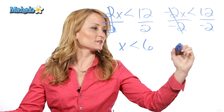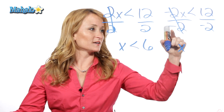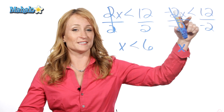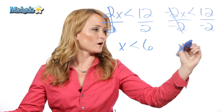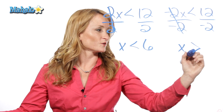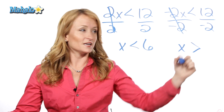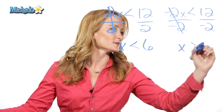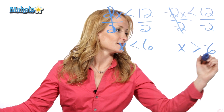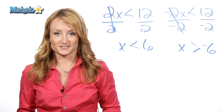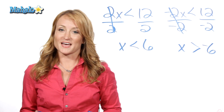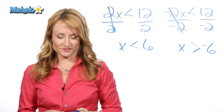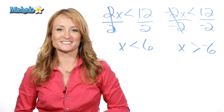So we divided by a negative, and we're left with x. Because we divided by a negative, we need to flip this inequality to greater than. And 12 divided by negative 2 is negative 6. Very different answer. And that's the most common mistake made when solving inequalities.